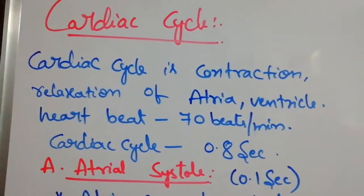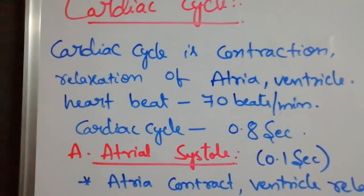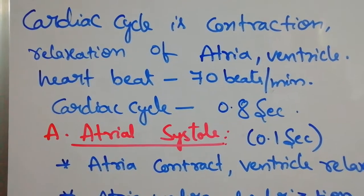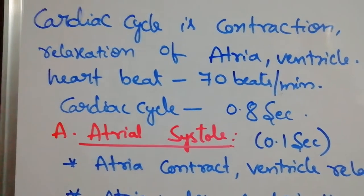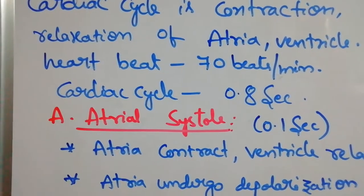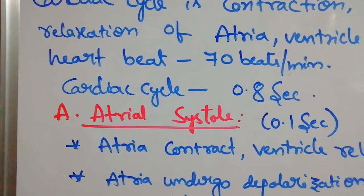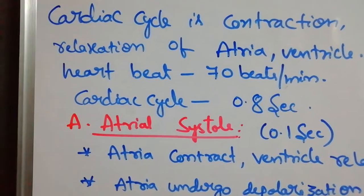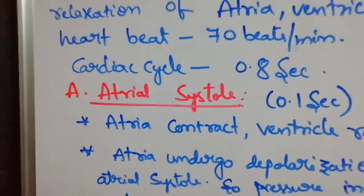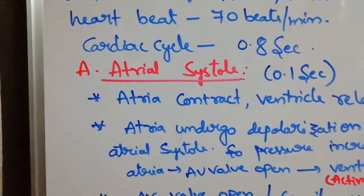Good morning students. Today's topic is cardiac cycle. Cardiac cycle means contraction and relaxation of atria and ventricle. Both atria and ventricle undergo contraction and relaxation — this is called the cardiac cycle. Heartbeats are 70 beats per minute, and the total cardiac cycle duration is 0.8 seconds.